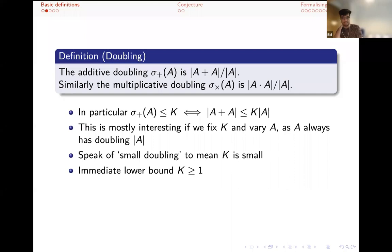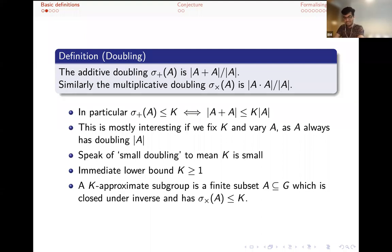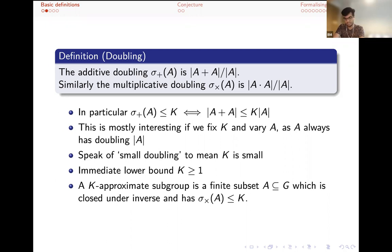We trivially have that K is at least one, because in a group, A plus A can never be smaller than A. One thing you can define from here is K-approximate subgroups. Obviously we're familiar with the notion of a subgroup - it's a set closed under multiplication or addition and inverses. But instead you can define an approximate subgroup where instead of saying A plus A is the same thing as A, we say the doubling is small. So a K-approximate subgroup is a finite subset which is closed under inverses and has small doubling.